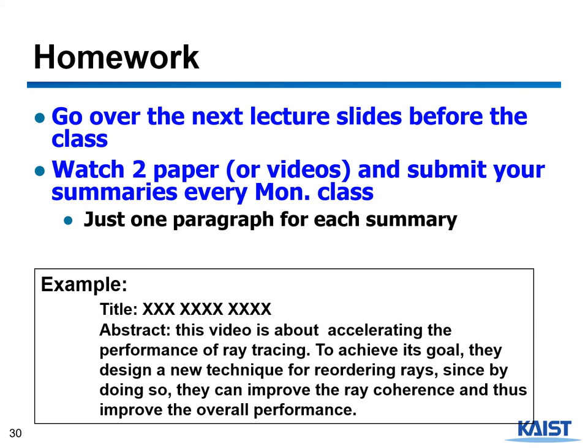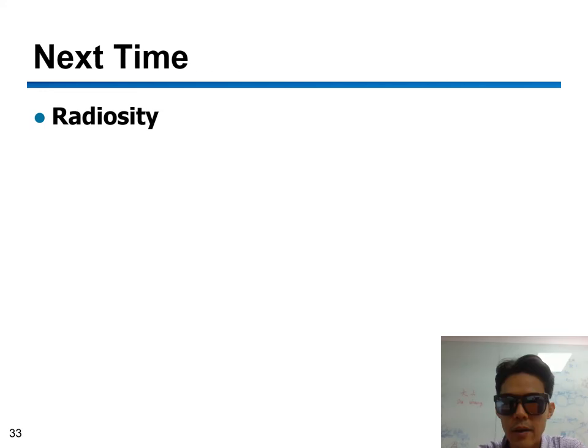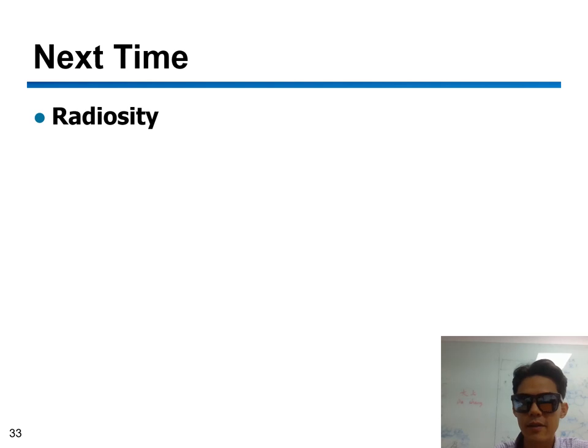For general homework: go over the next lecture slides before class and watch a paper or video. You don't need to go over details of the paper — just watch the video, see what topics and techniques are covered, and submit your summary right before every Monday class. Just one paragraph for each summary is okay. You can write in English or Korean. I hope that by now you can understand the basic ray tracing — how to generate rays, use acceleration data structures like bounding volume hierarchies, and know about the recent rendering engines. Next time I will talk about radiosity, which is another important rendering scheme for global illumination.